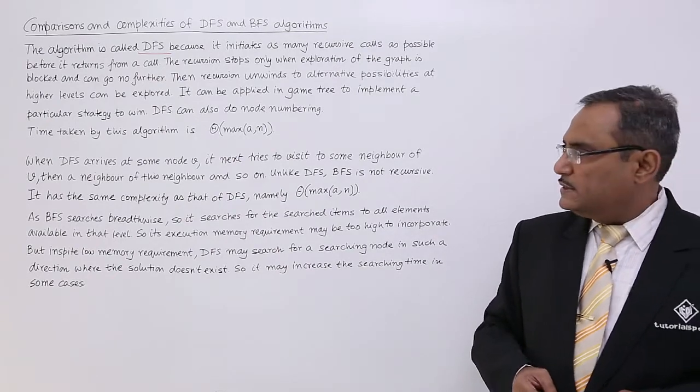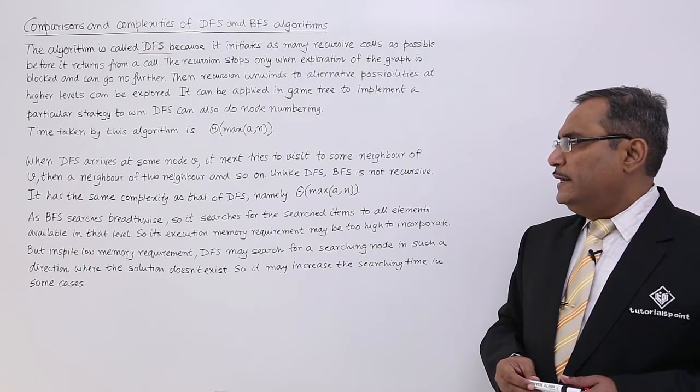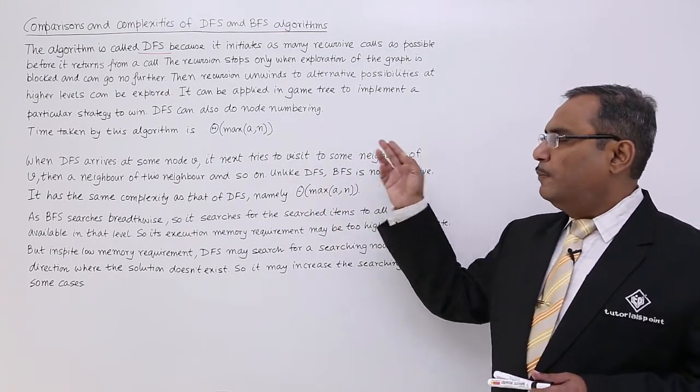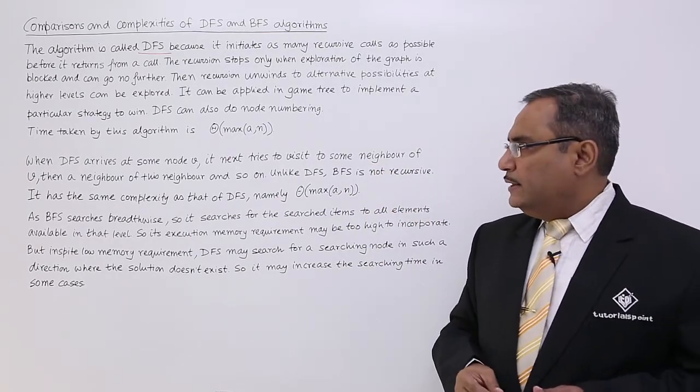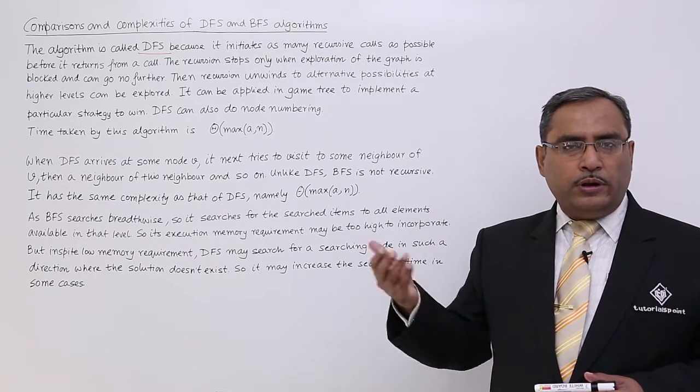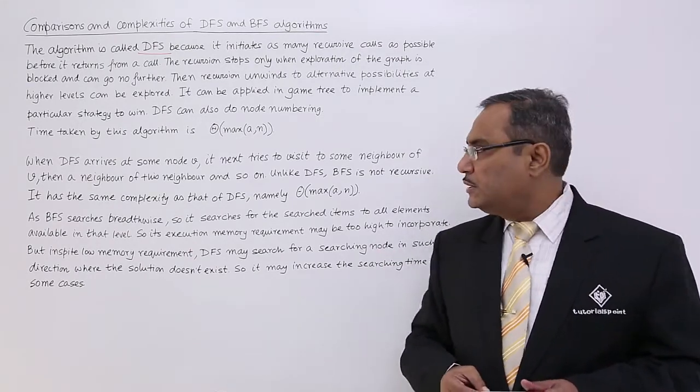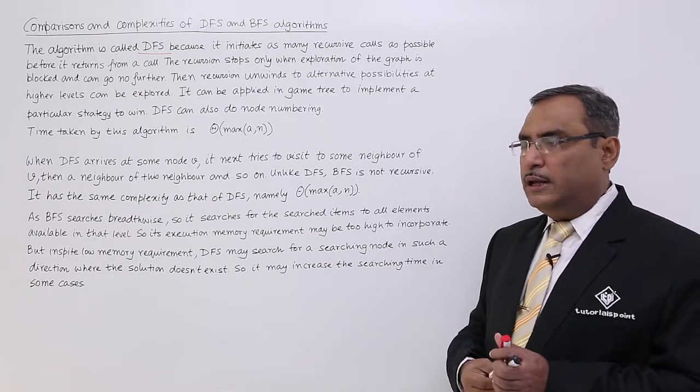Now let us come for the BFS. When DFS arrives at some node V, it next tries to visit some neighbor of V. Here we have used the term neighbor, that means the adjacent. Then a neighbor of this neighbor and so on. In this way, the algorithm will go on doing the recursion. Unlike DFS, now we are concentrating on the BFS.